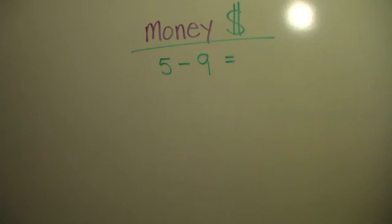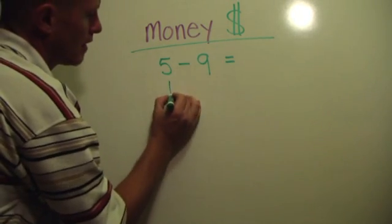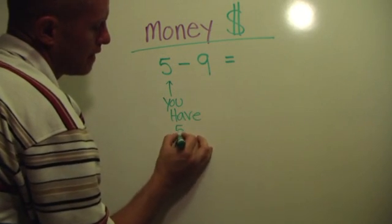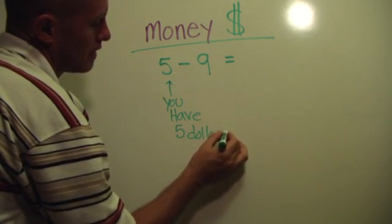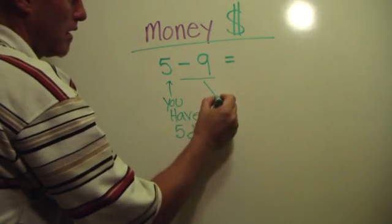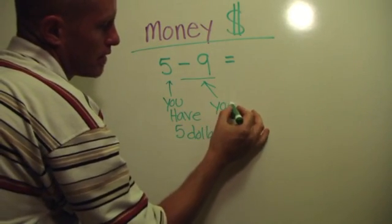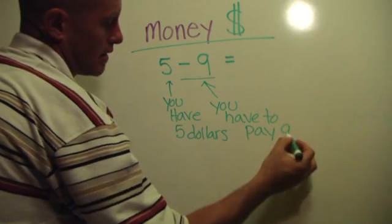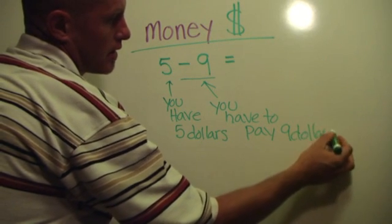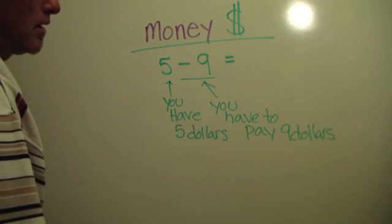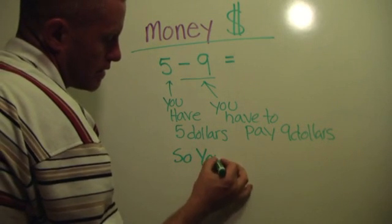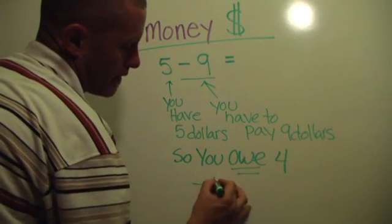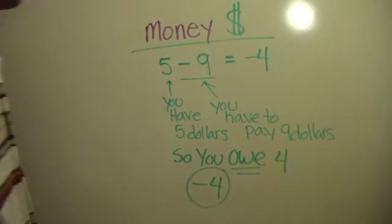I'll talk about money a lot when we talk about integers. It's a great way to understand it. Here we have five. You have five dollars. That's the good news. But you owe nine. You have five dollars, but you owe nine dollars. You have to pay someone nine dollars. Think about what that means, what your situation would be. Five, the money you have, minus nine, the money you owe. You're going to wind up owing. You can pay the five dollars that you have, but you owe four. And we indicate that we owe with a negative symbol. Five minus nine is negative four.